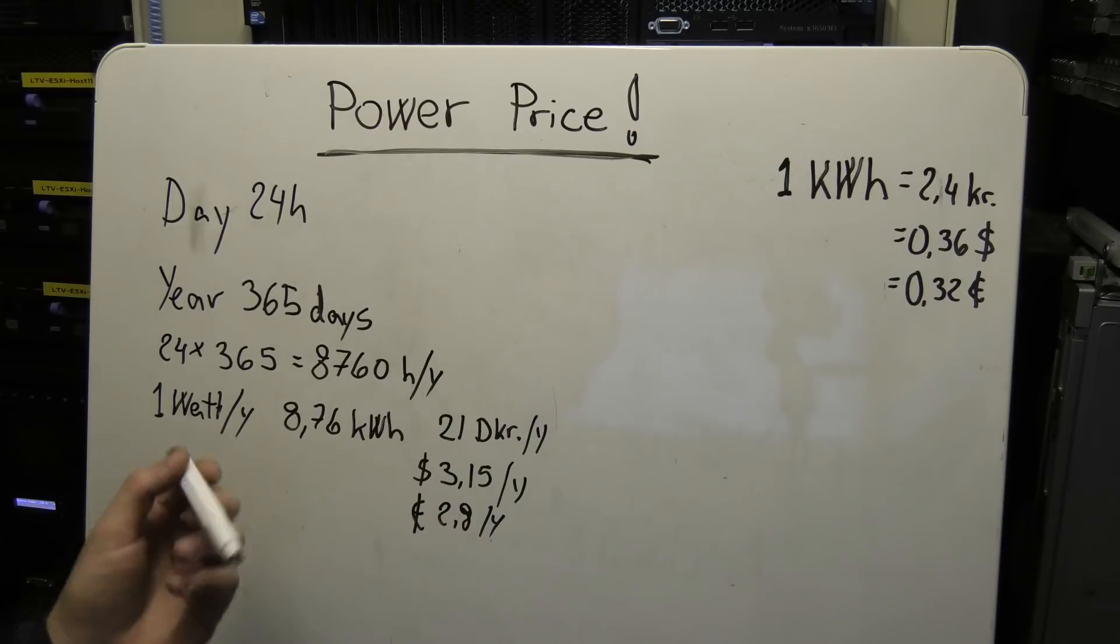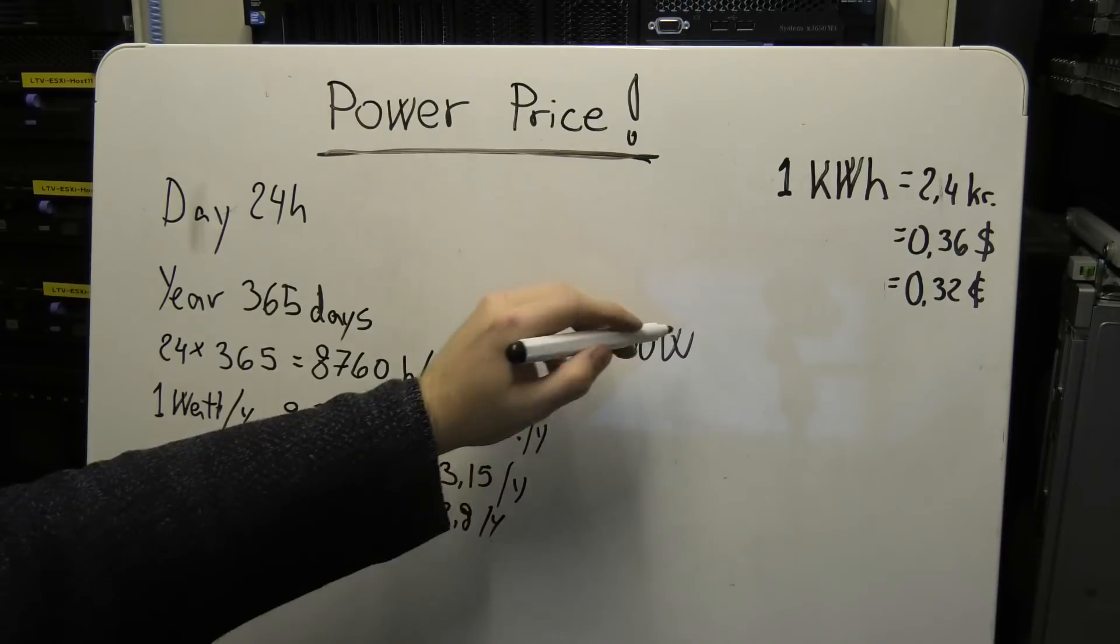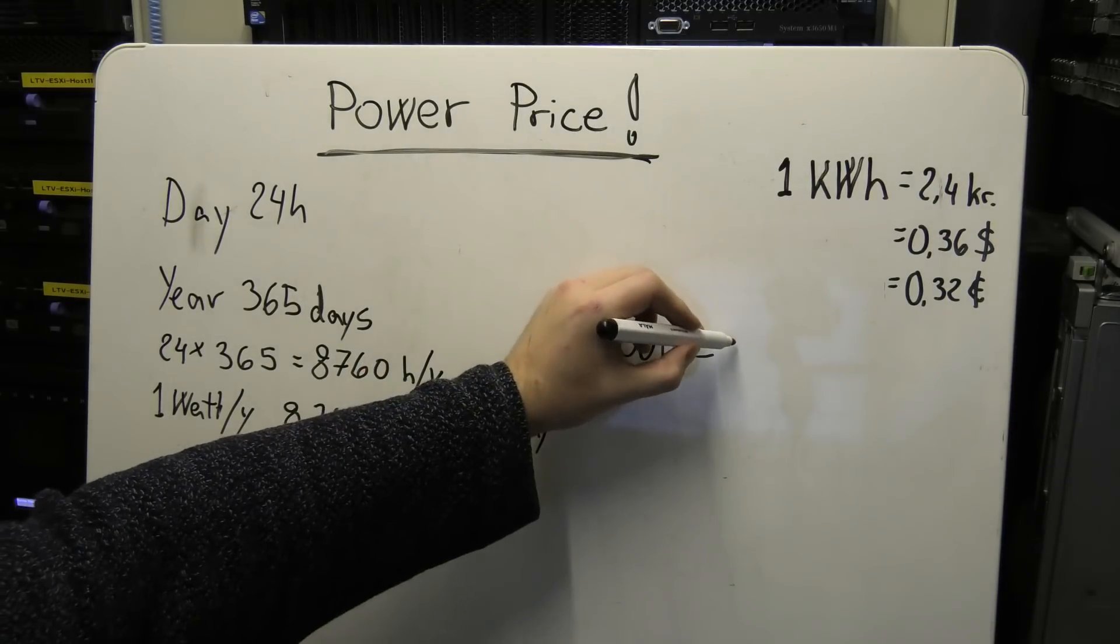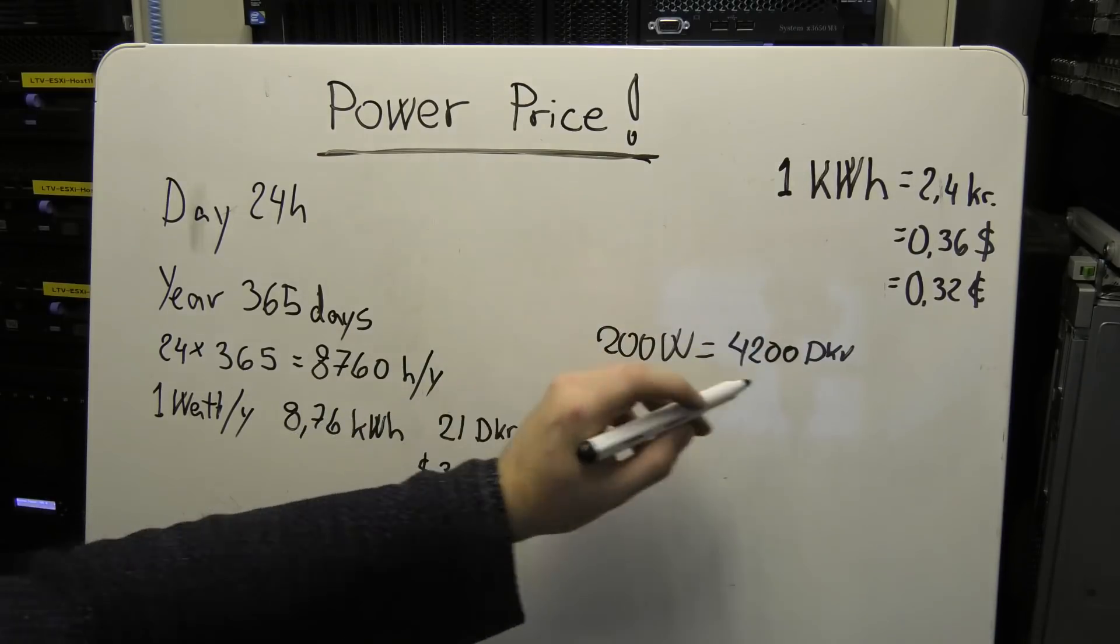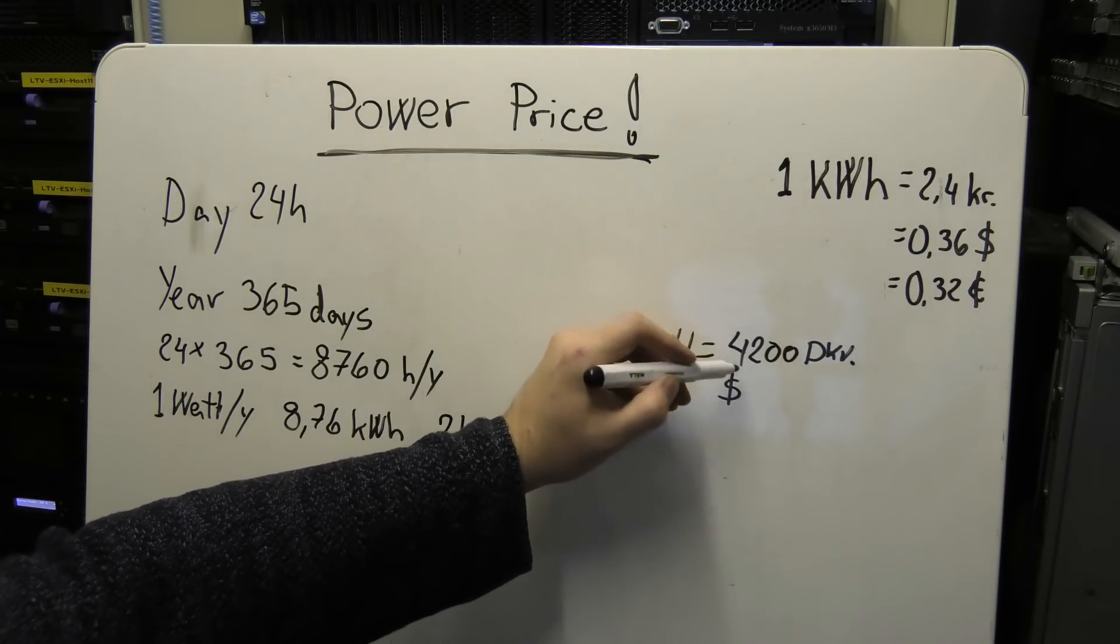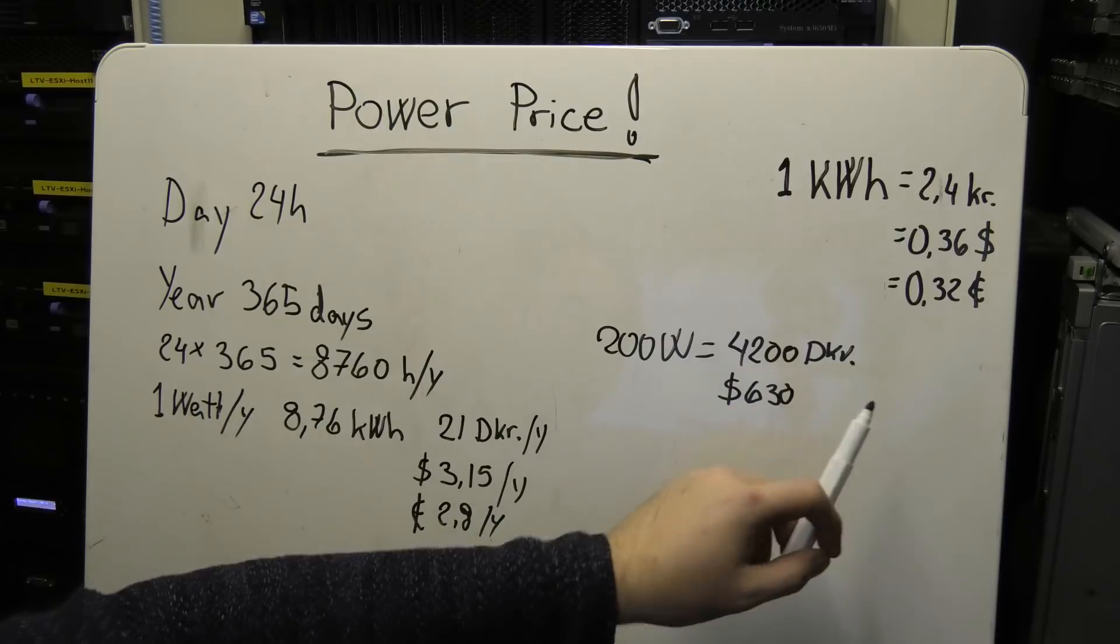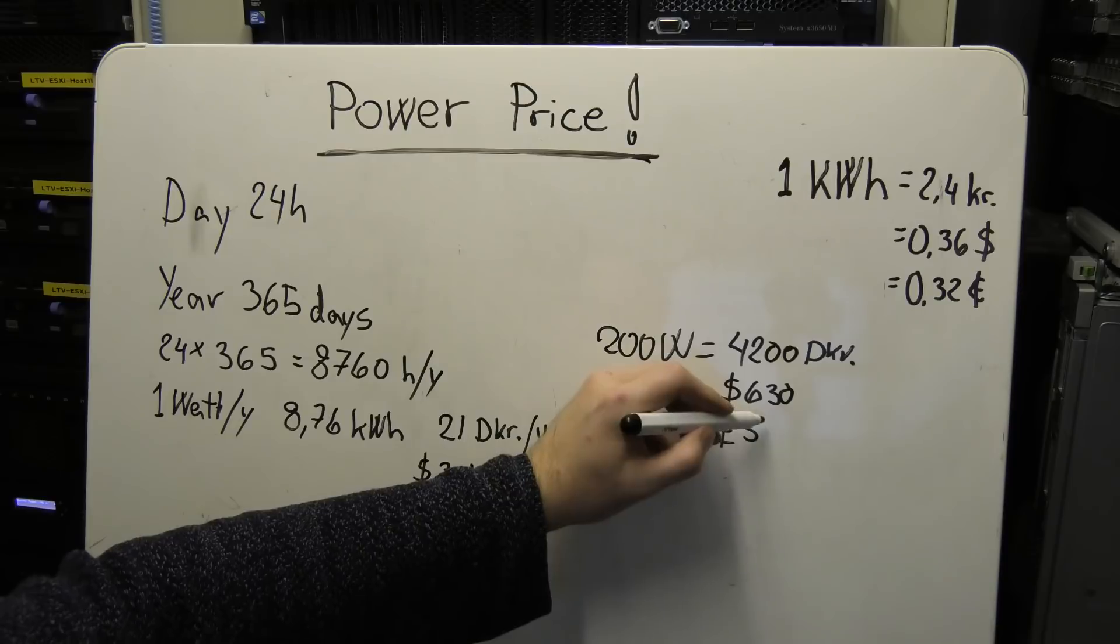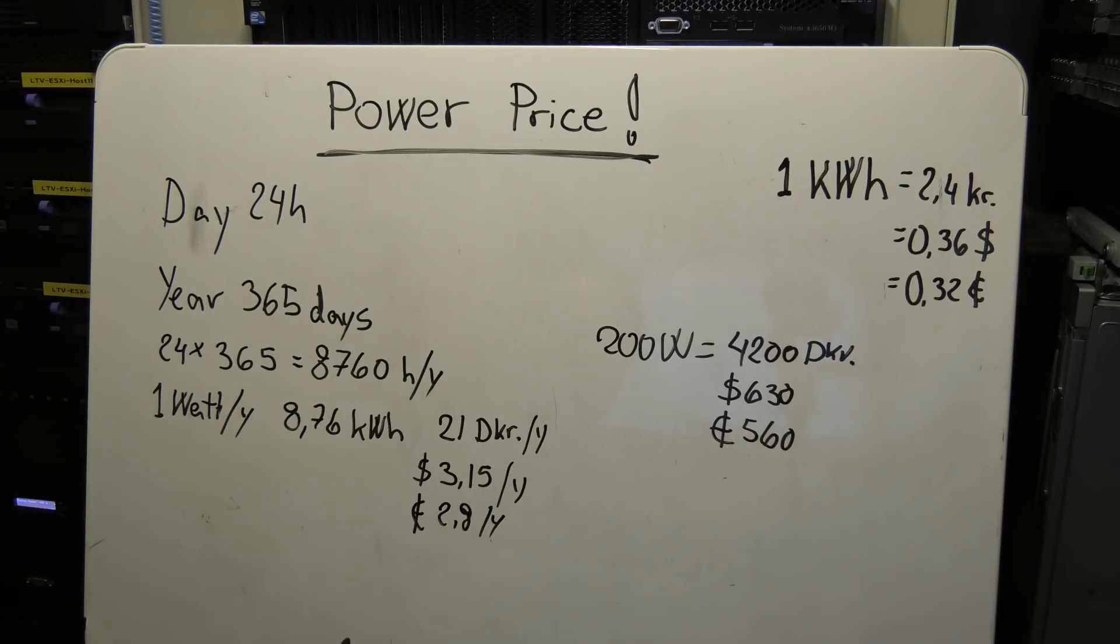A server like the cloud server in here that was 200 watts, and I calculated that. So the price of running that one year in Danish kroner, that's 4,200 DKR, and in dollars that's $630. If your price is different, you will of course have different prices here. And in euros, 560. It's a lot of money to run one server for one year.